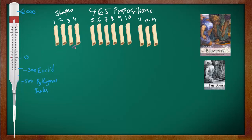Book 3 is about circles. Then we have Book 4, which is about constructing regular polygons — that's about construction. Polygons could be three-sided, four-sided, or five-sided figures. Books 1 and 2 are about angles, triangles, and parallel lines.